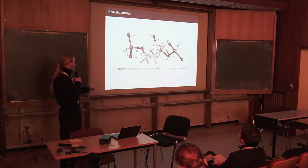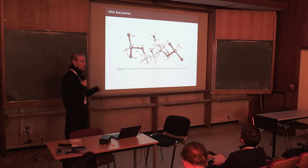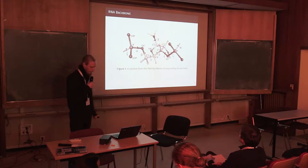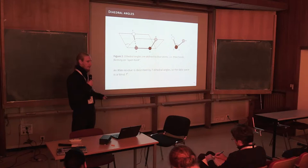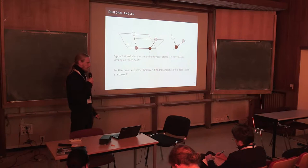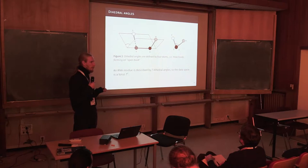are the seven dihedral angles which are usually considered most expressive to describe the geometry of this backbone, and also the cutting of the base. So essentially, with these seven dihedral angles, we get a torus data space, seven-dimensional torus, because every angle can run from zero to two pi. The residual geometry is characterized as a point in the seven-dimensional torus.